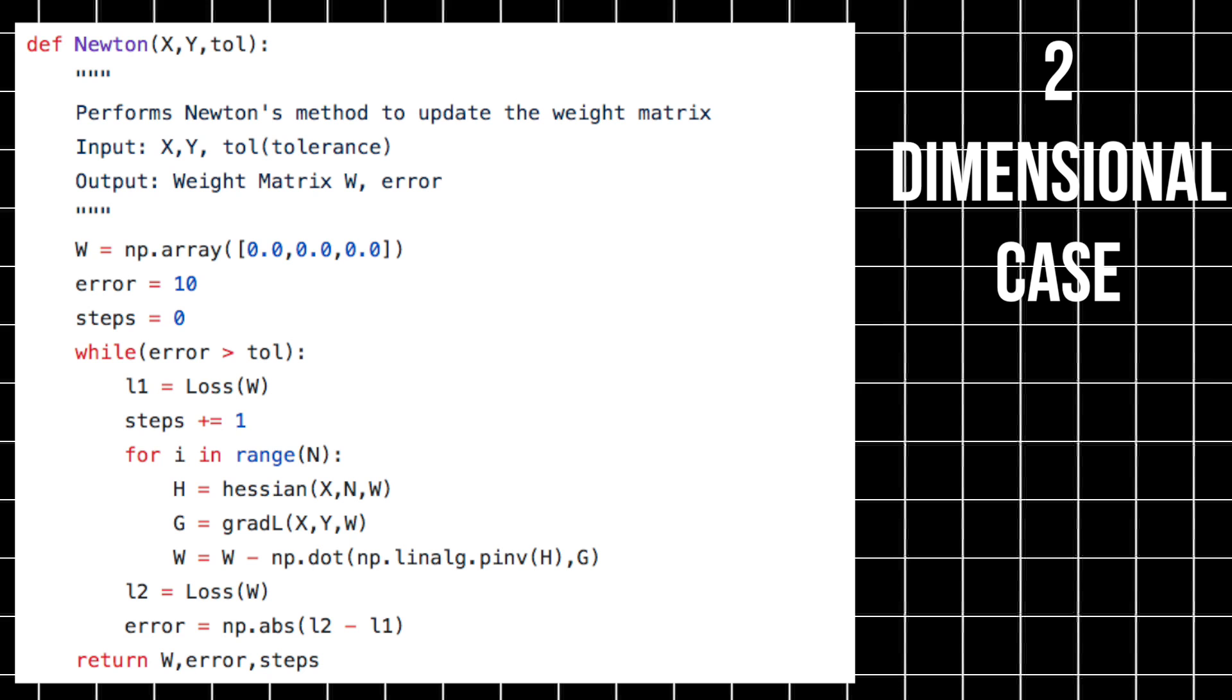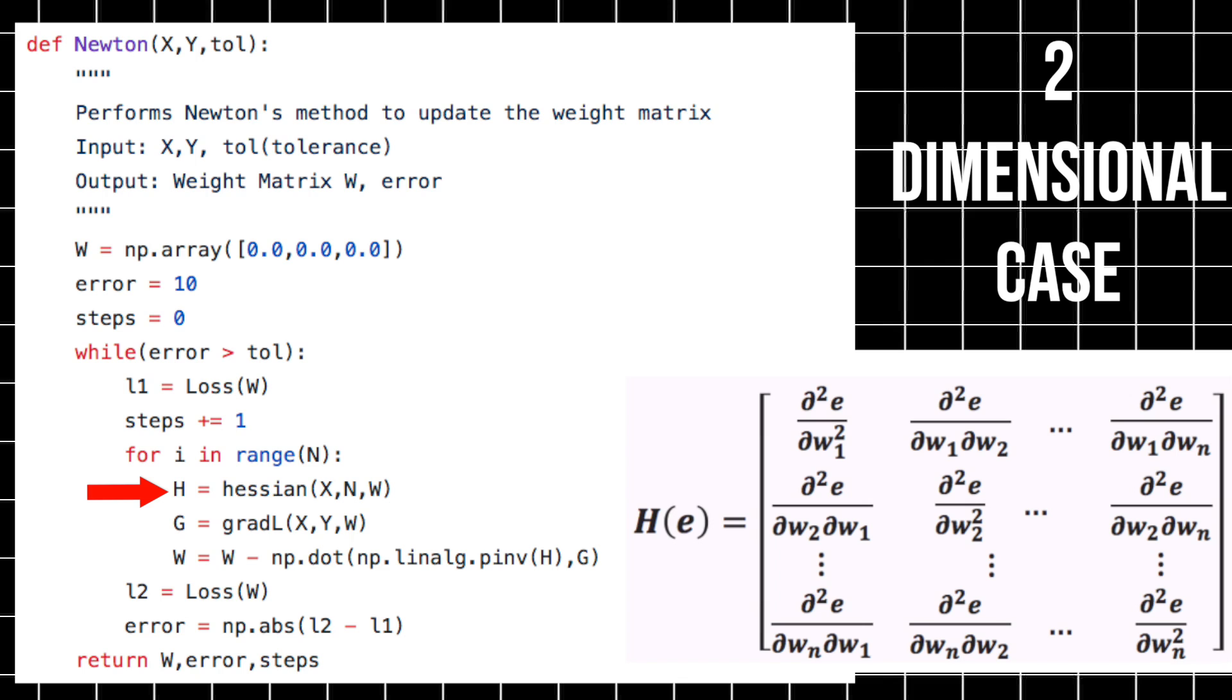In the second case, let's say we've got a function of multiple dimensions. We can find the minimum of it using the same approach except for two changes. We replace the first derivatives with a gradient and the second derivatives with a Hessian. A Hessian is a matrix of the second order partial derivatives of a scalar. And it describes the local curvature of a multi-variable function.